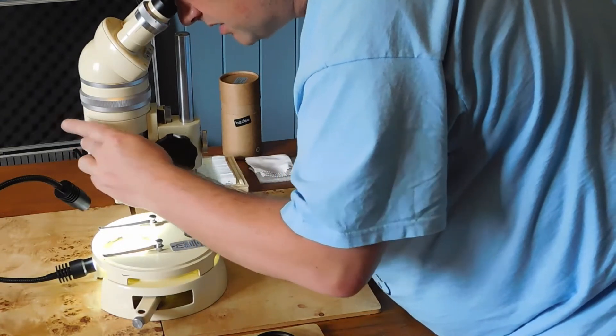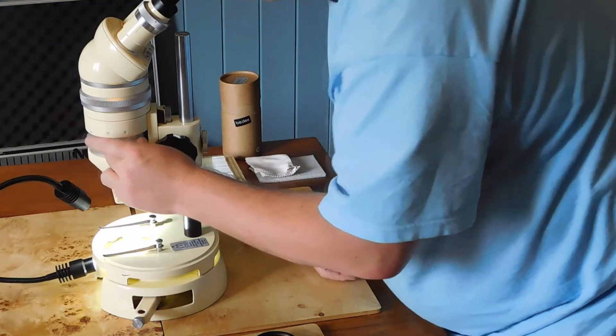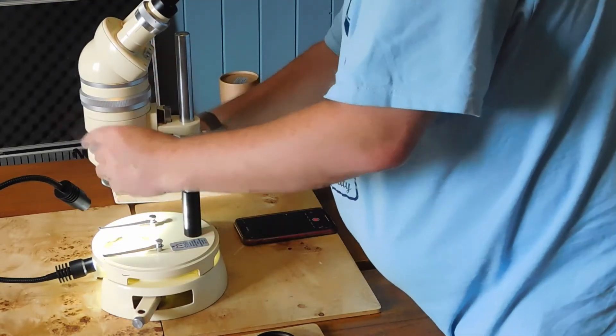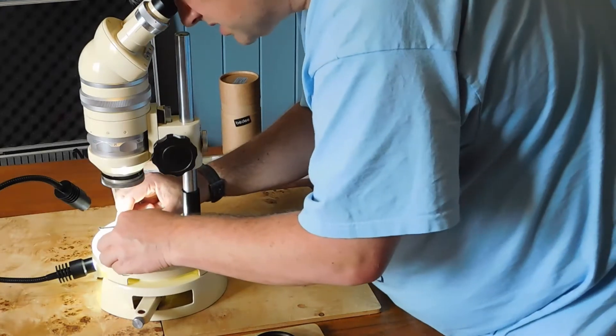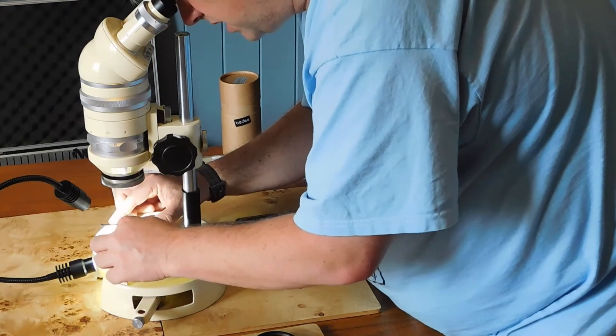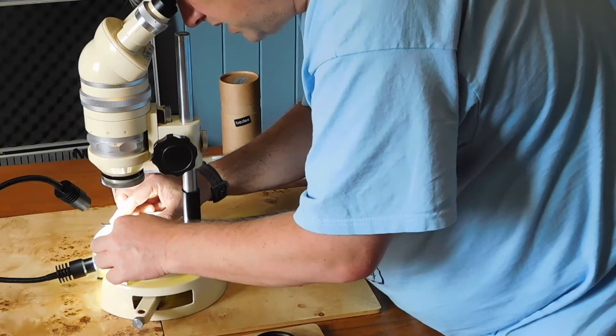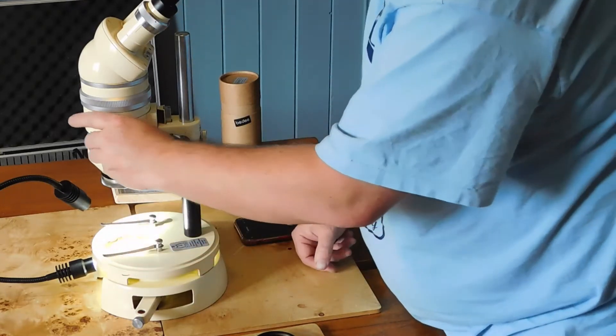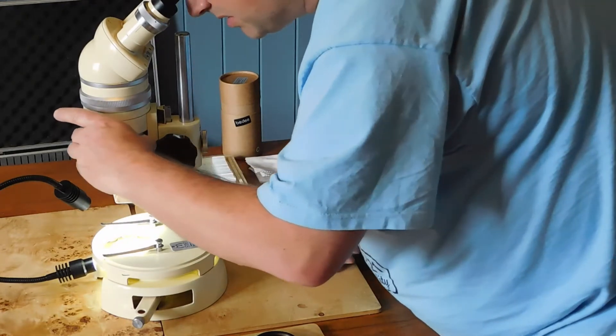You can start off on setting six and get it nicely positioned so that the honey bee wing is in the center of the slide, and then you can move the magnification up.